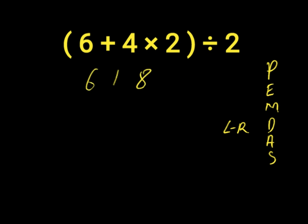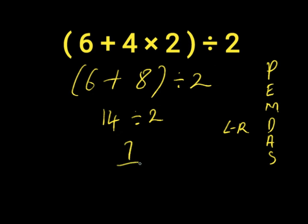Then we have 6 plus 8, then divide by 2. 6 plus 8 gives us 14, then we have 14 divided by 2. Solving our division: 14 divided by 2 is 7. So 7 is the correct answer to this expression.